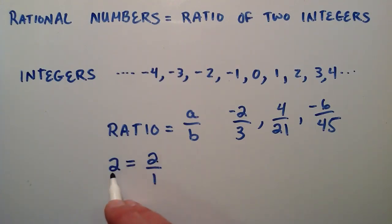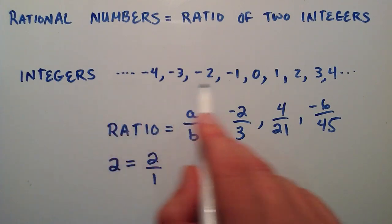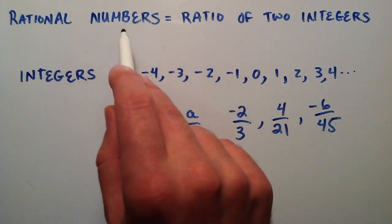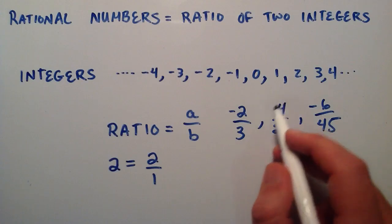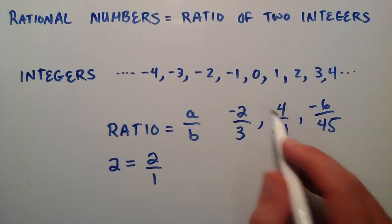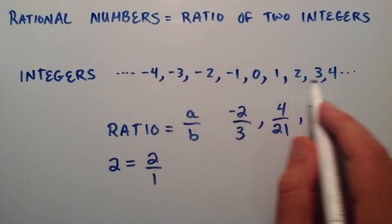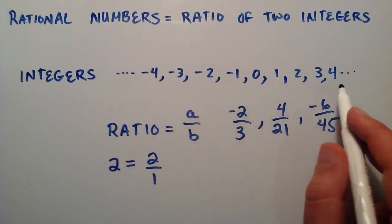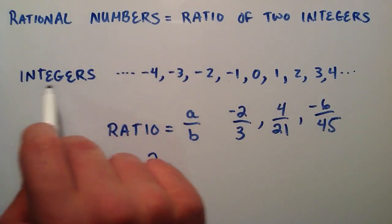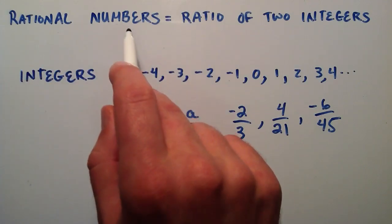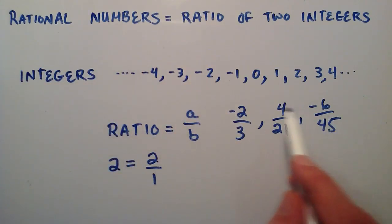Therefore every integer can be divided by one, and therefore every integer is a rational number. On the other hand, rational numbers aren't always integers. For example, four divided by twenty-one can't be written as one of these numbers up here. So therefore, all integers are rational numbers, but not all rational numbers are integers.